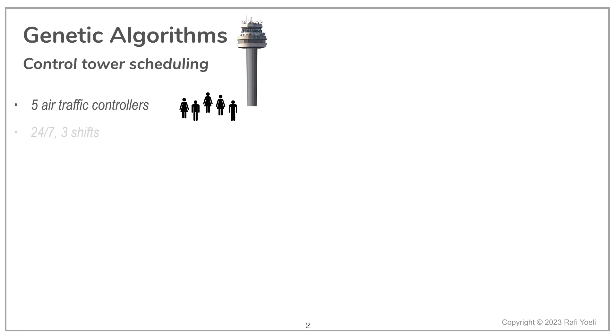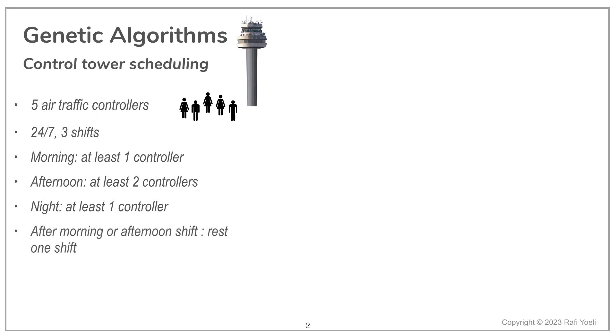Five air traffic controllers are working in a control tower of a small airport. The tower is manned 24-7 in three shifts. The morning shift needs one controller in the tower. The afternoon is busier, so there's a need for two controllers. One controller is needed for the night shift.